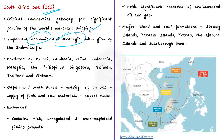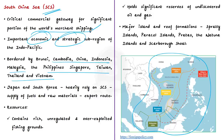The South China Sea is bordered by countries like Brunei, Cambodia, China, Indonesia, Malaysia, Philippines, Singapore, Taiwan, Thailand, and Vietnam. The recent economic growth of these countries has contributed to a large portion of world commercial merchant shipping passing through these waters. Japan and South Korea also heavily rely on the South China Sea for supply of fuels, raw materials, and as an export route.